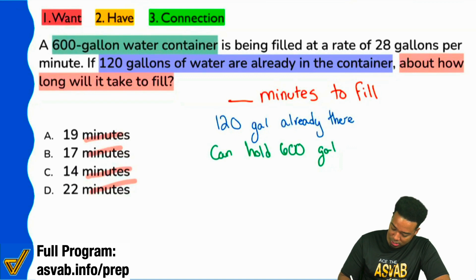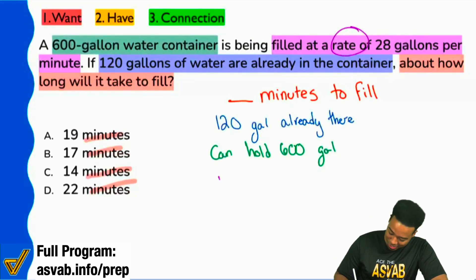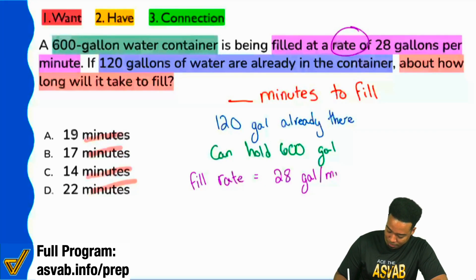So it can hold 600 gallons. And then we see that it says filled at a rate of 28 gallons per minute. Everybody, they give it away. They tell you the rate right there. So you can say rate, if the fill rate equals 28 gallons per minute.